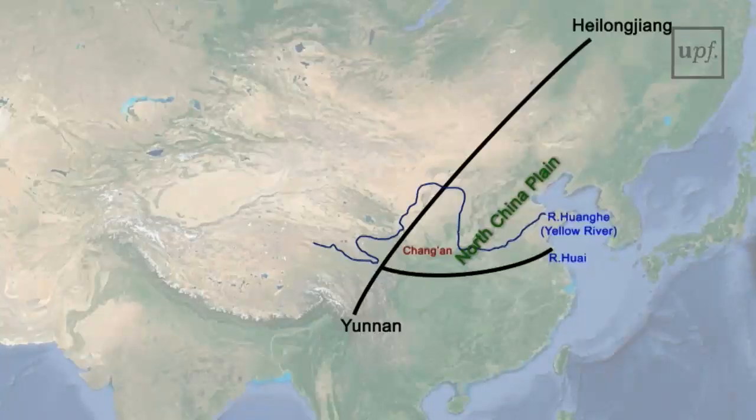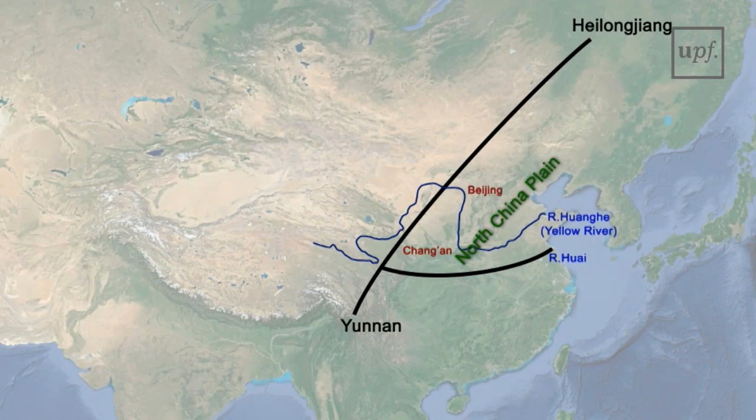This is the zone that produces dry cereals like millet, barley and wheat, and where pasta is eaten. Maybe Marco Polo brought it from here to Italy. North China has also been the seat of many Chinese capitals: Chang'an, which was on many occasions the capital of Imperial China, and Beijing.